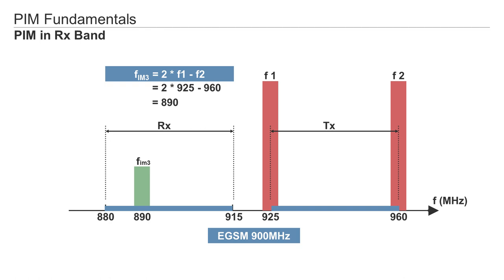The power that a mobile device can send out to the base station is limited. Therefore, if noise is created in a transmission line because of PIM, the BTS can no longer understand the mobile devices so well. It can happen that the contact is interrupted or even gets lost completely. You will recognize this in bad coverage, bad connectivity, and slow or no data transmission.